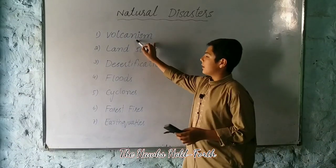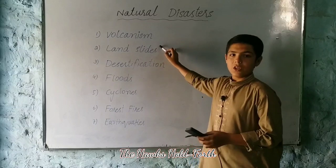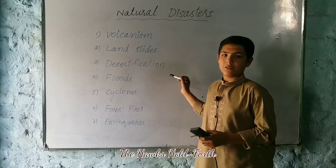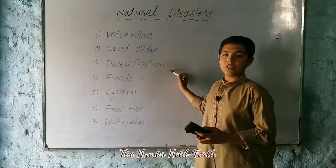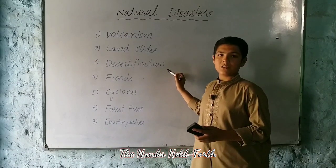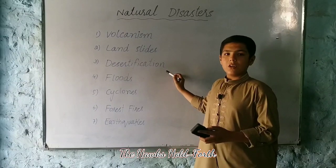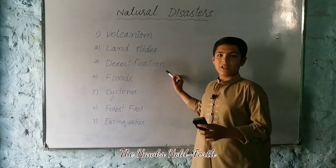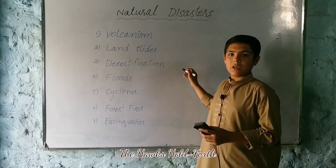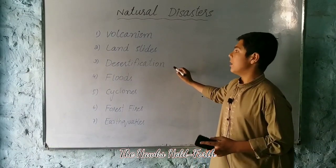Number one is called volcanism. Volcanism is the process in which molten rock called magma erupts from the rear end of a volcanic mountain, and when it comes out it converts into lava. Lava is a form of magma which solidifies after reacting with air. Many cities and areas are destroyed by volcanism.